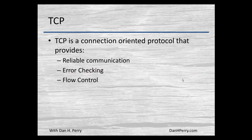A TCP connection is a transport layer protocol. It is connection-oriented in that it provides reliable communications. We know if the other end received our packet, we know if there are any errors, and we can control the speed at which the transmission occurs.